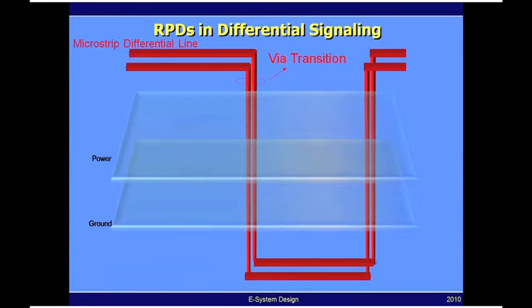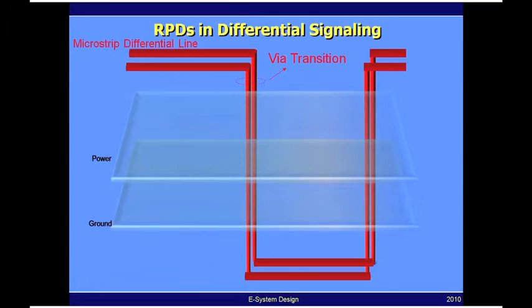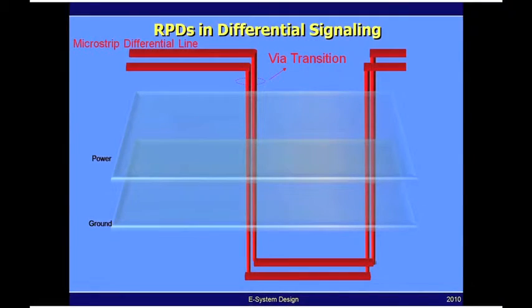It's a four-metal layer test vehicle where the differential lines transition through vias from the top to the bottom and back to the top. The reason for having two via transitions is so that we can measure the response from the top side of the test vehicle.